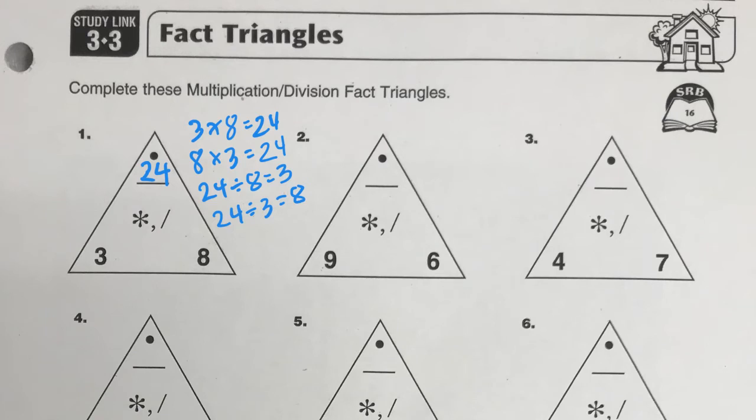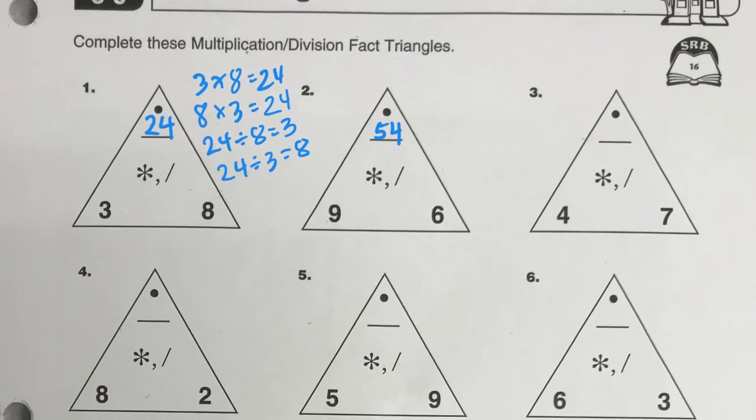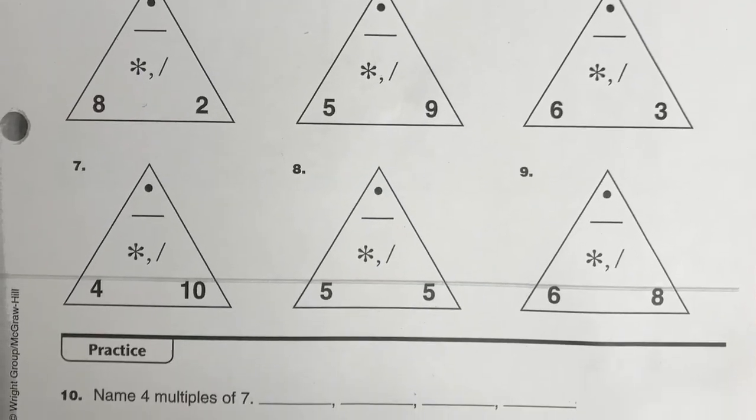So the next one, for example, the factors are 9 and 6, the product is 54. And those are pretty simple. I think you can do the rest of those on your own.